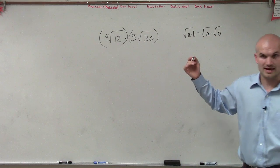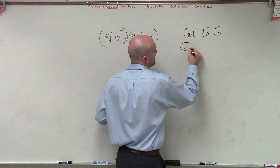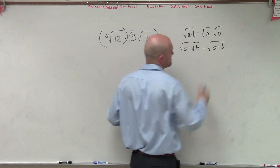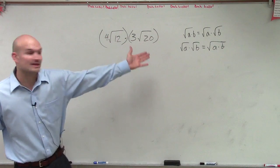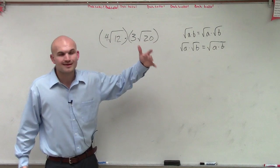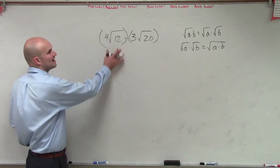Right? That was how we used that last problem. Well, what that means then, if I have the square root of a times the square root of b, that equals the square root of a times b. So what that means is you can multiply these. So I could do 12 times 20 and 4 times 3. That might get a little bit bigger number. That's going to get us all the way up to 240.